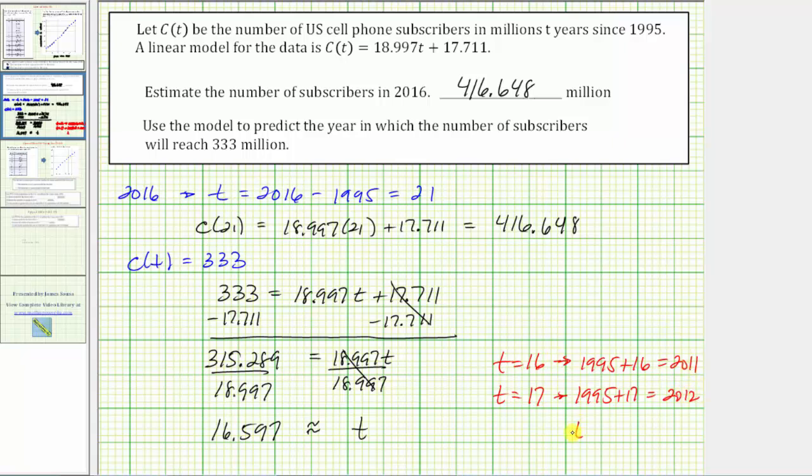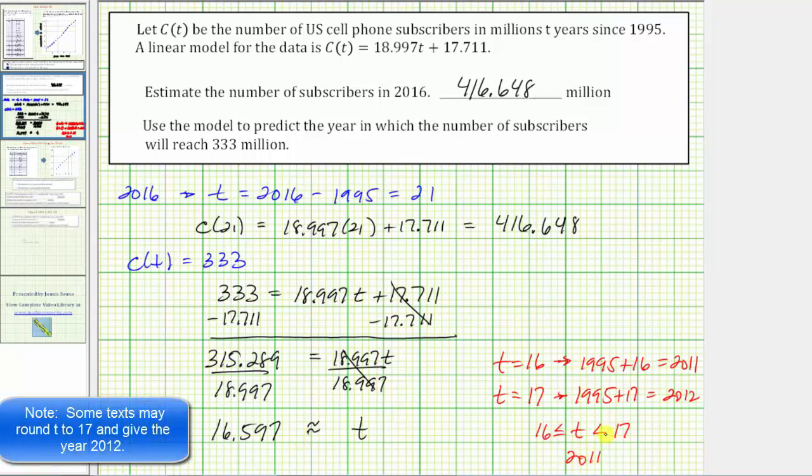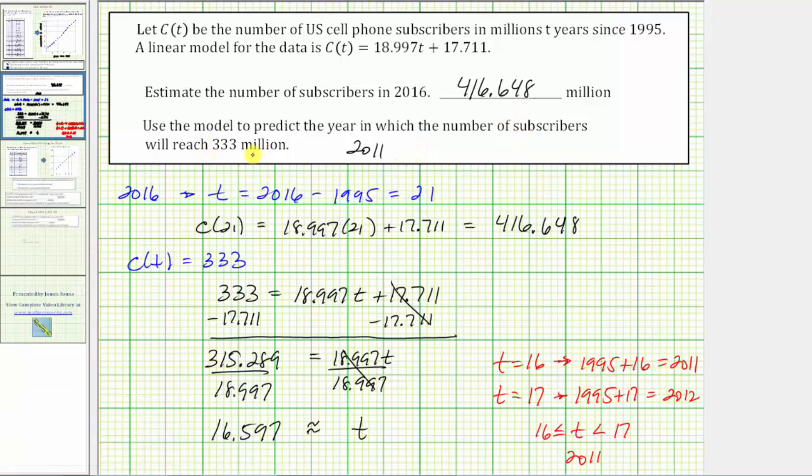Which means if t is greater than or equal to 16 and less than 17, then that would be sometime in the year 2011. Because our value of t is in this interval, we'll make the prediction that in the year 2011 the number of subscribers will reach 333 million.